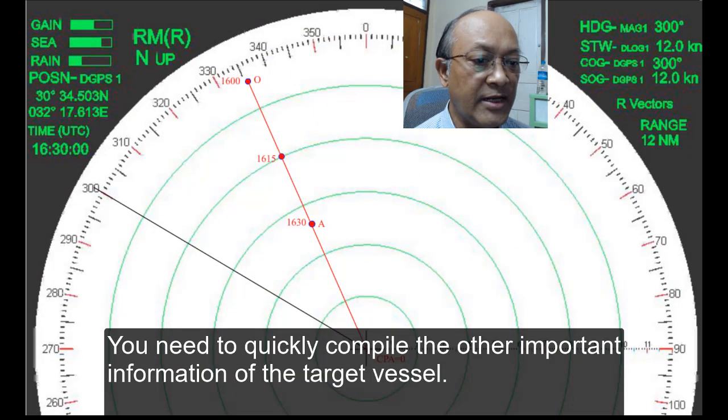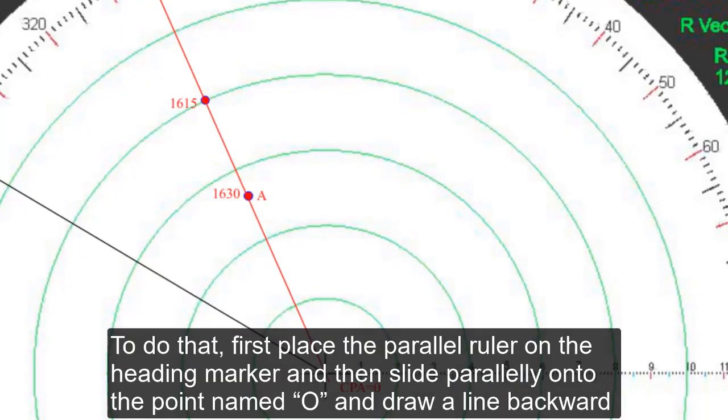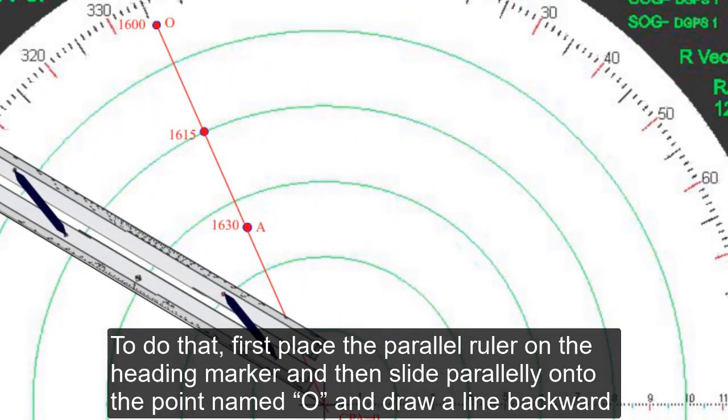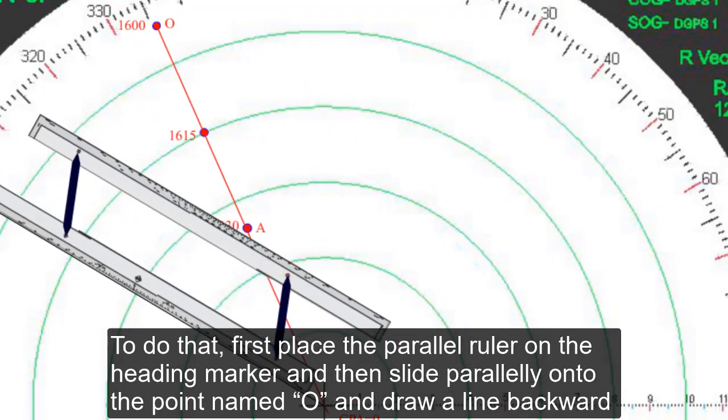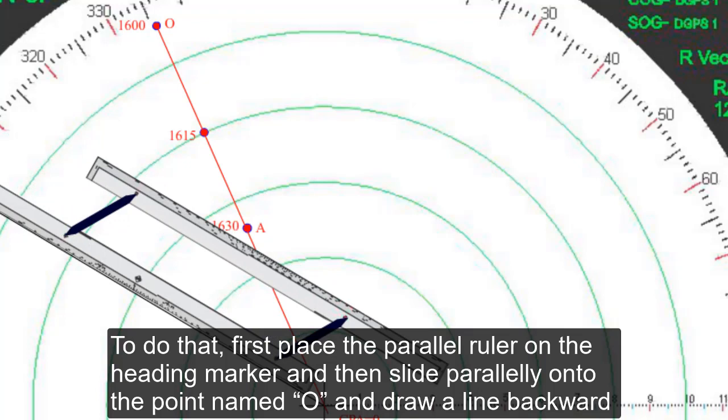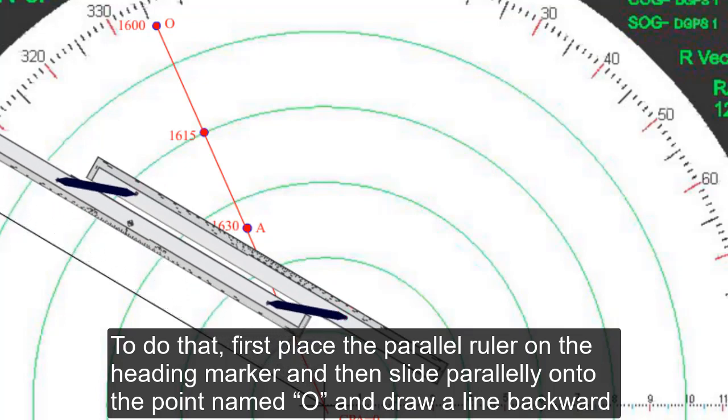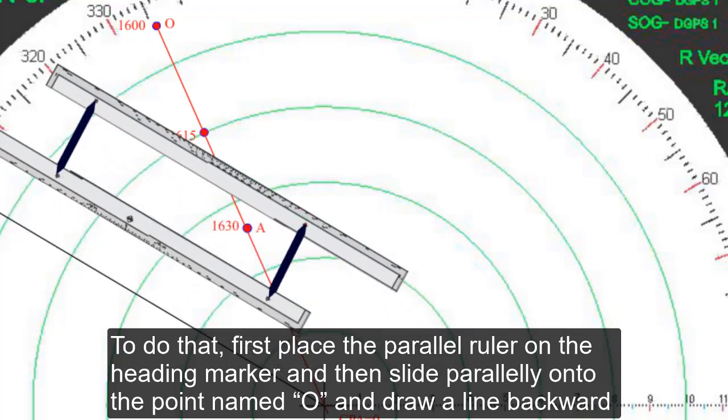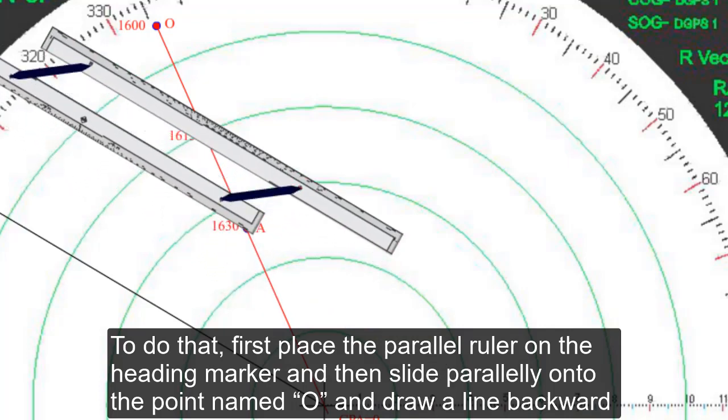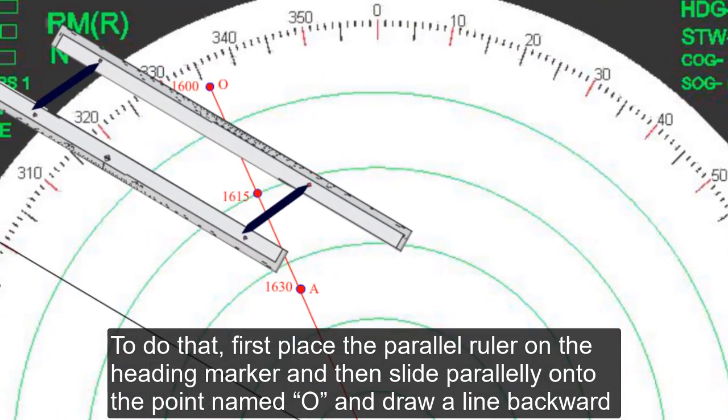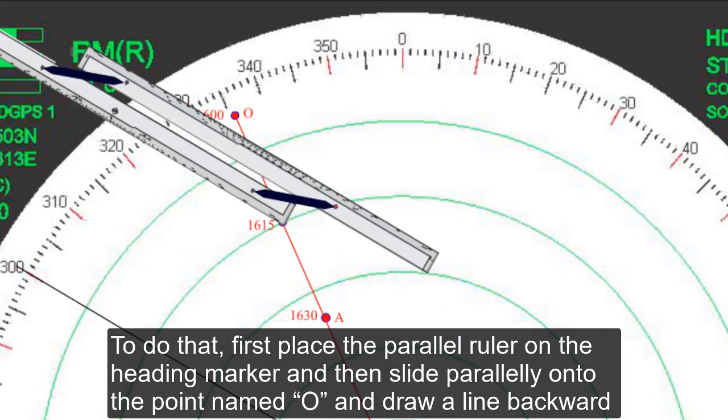You need to quickly compile the other important information of the target vessel. To do that, first place the parallel ruler on the heading marker, and then slide it parallel onto the point named O and draw a line backward of heading from the point O.